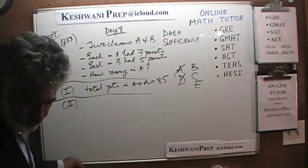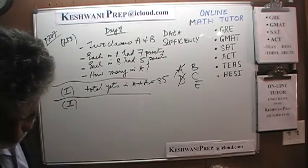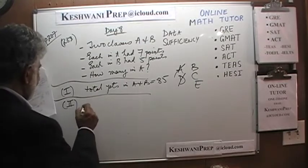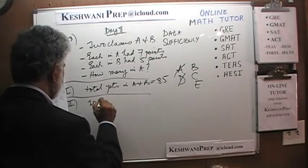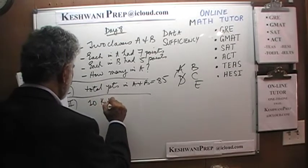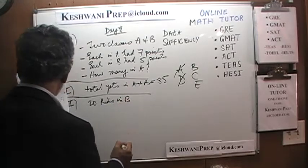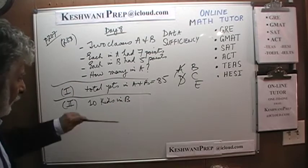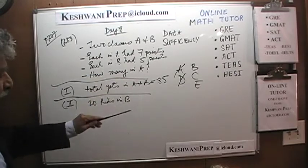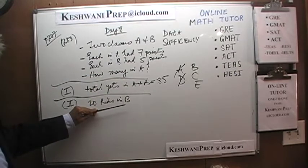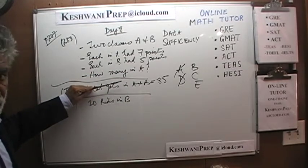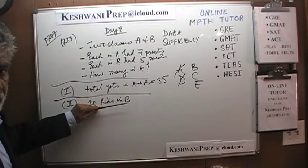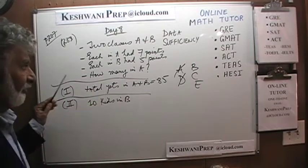The second statement tells us that there are ten kids in B. When looking at the second statement, we cannot consider the first statement. The second statement by itself does not do any good. The information in the first statement was useful but not sufficient. The information in the second statement is also useful but not sufficient on its own.